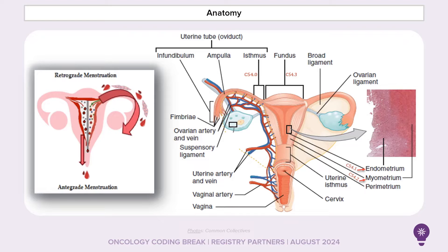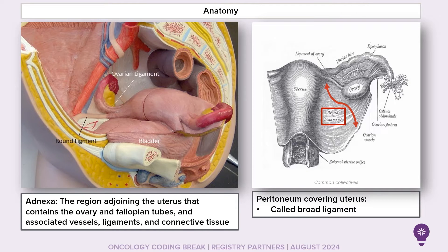The uterus, fallopian tubes, and ovaries are covered by the broad ligament, which is an extension of the peritoneum. As shown in the model, the peritoneum comes down covering the bladder, uterus, fallopian tubes, and ovaries — and this is called the broad ligament.